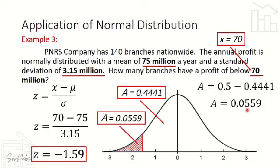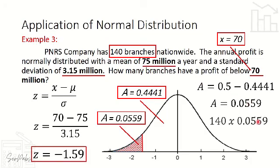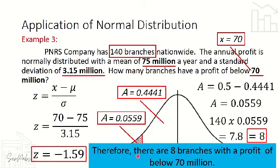The area is 0.0559, and the question asks how many branches out of 140. So: 140 × 0.0559 = 7.826, which rounds to 8. Therefore, there are 8 branches with a profit below 70 million out of the 140 PNRS branches nationwide.